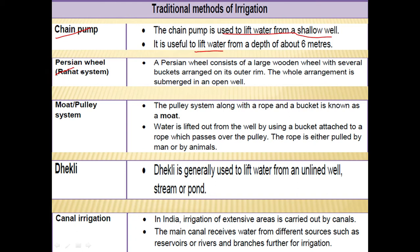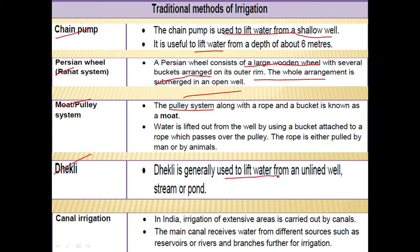In the rahat system, the whole arrangement is submerged in an open well and water is supplied. In the moat system, a pulley system along with a rope and bucket is used to lift water from the well; the rope is either pulled by a man or by animals. Dekli is generally used to lift water from unlined wells, streams, or ponds.